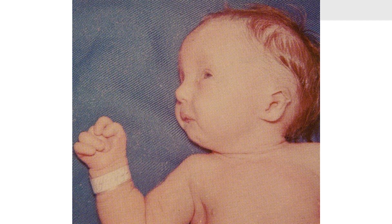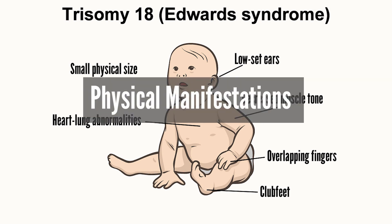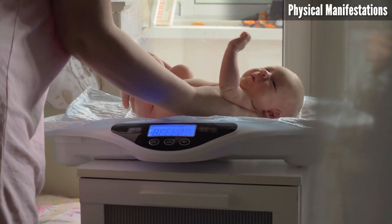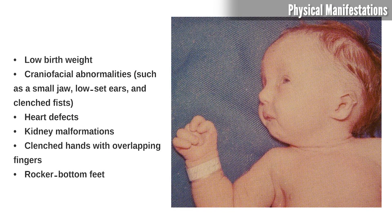Symptoms and Signs. The manifestations of Trisomy 18 vary widely among affected individuals, but there are several common features that characterize the condition. Physical manifestations include low birth weight, craniofacial abnormalities such as a small jaw, low-set ears, and clenched fists, heart defects, kidney malformations, clenched hands with overlapping fingers, and rocker bottom feet.